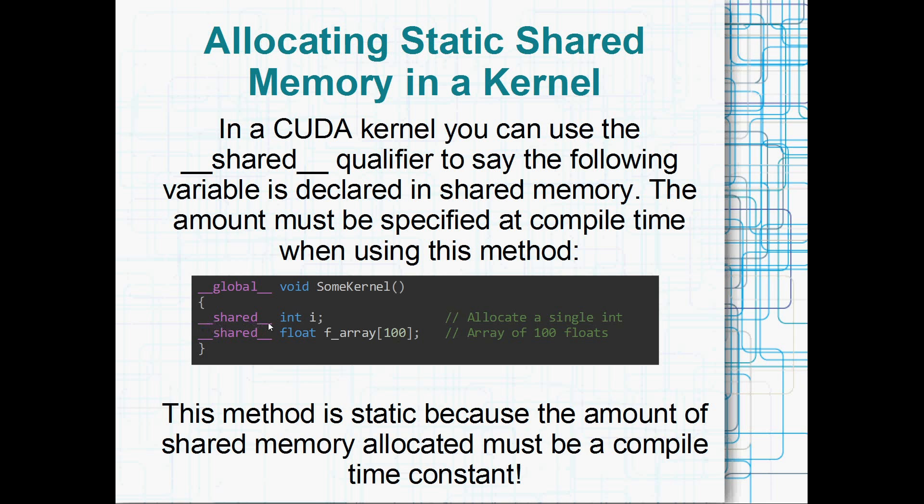Something like this down here, we have __shared__ int i would be a shared integer. So every thread in the block is going to have exactly the same variable i, and every block that you run in your grid is going to have a different shared i. Or, if you like, you can also allocate an array of shared memory.